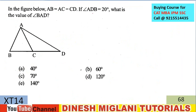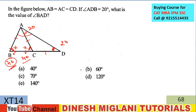Next statement: AB = AC = CD and angle ADB = 20°. Since AB = AC, the base angles are equal — both 20°. Since AB = AC = CD, and using the external angle theorem, X = 40°. So angle at the relevant vertex is 40° and angle ADB is 20°. Therefore angle BAD = 180° - (40° + 20°) = 120°. The answer is D — angle BAD = 120°.